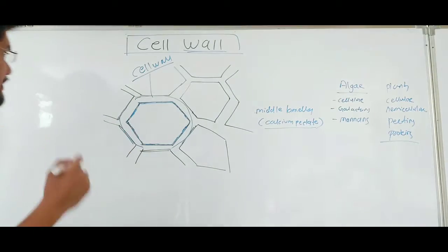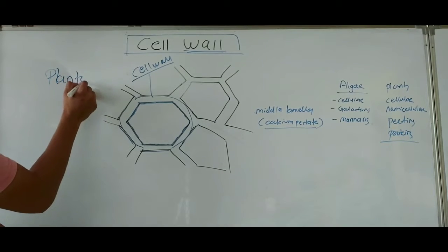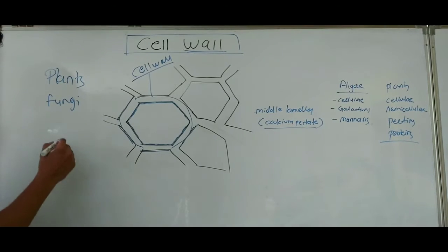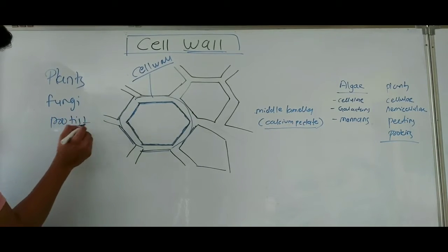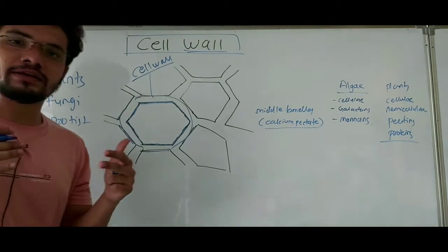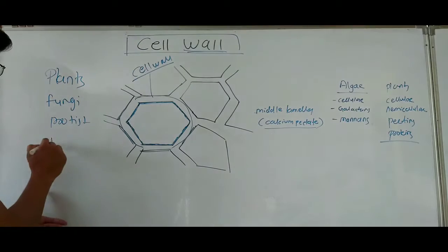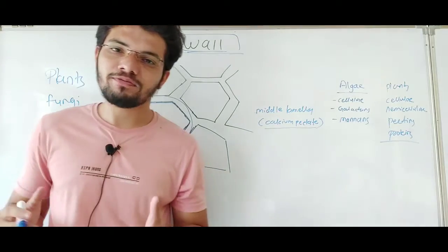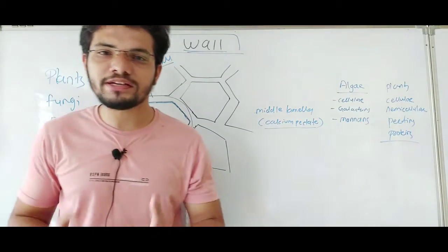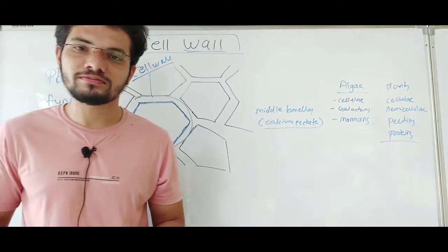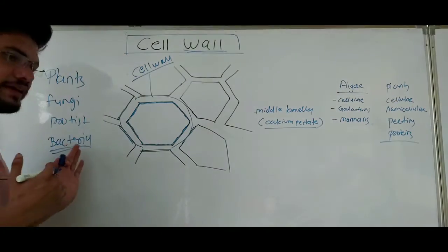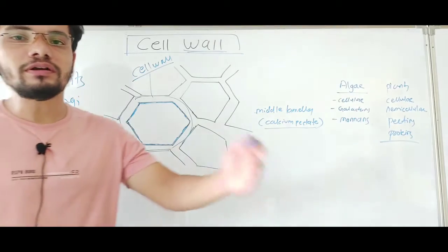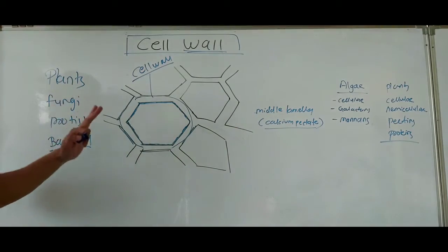Cell wall is mainly present in plants, fungi, some protists, and bacteria. As we have seen, bacteria can be classified as gram positive and gram negative according to their cell wall composition — the type of cell wall they possess determines their classification.